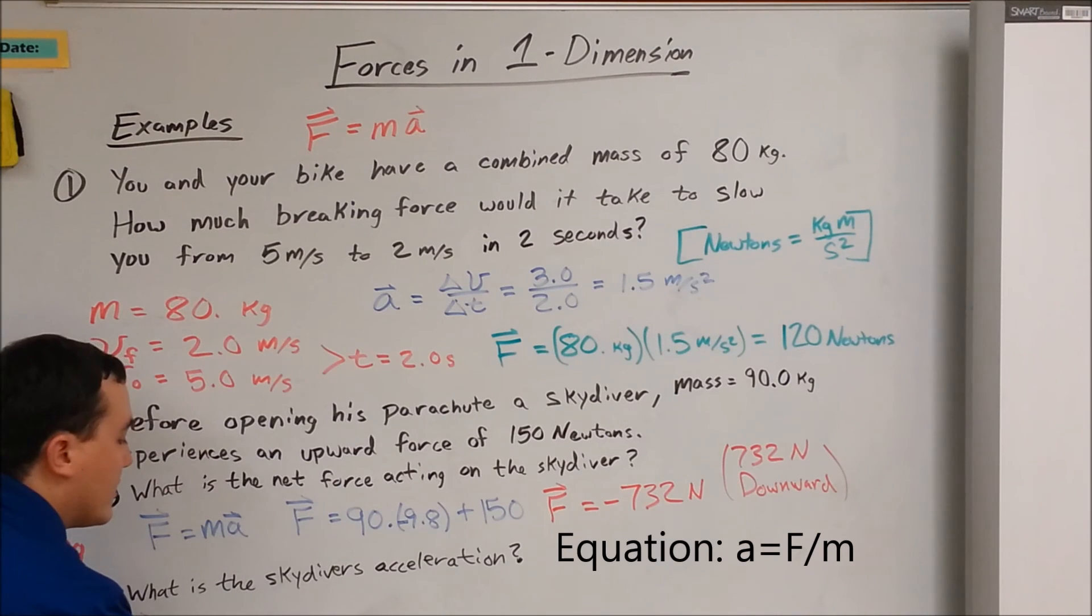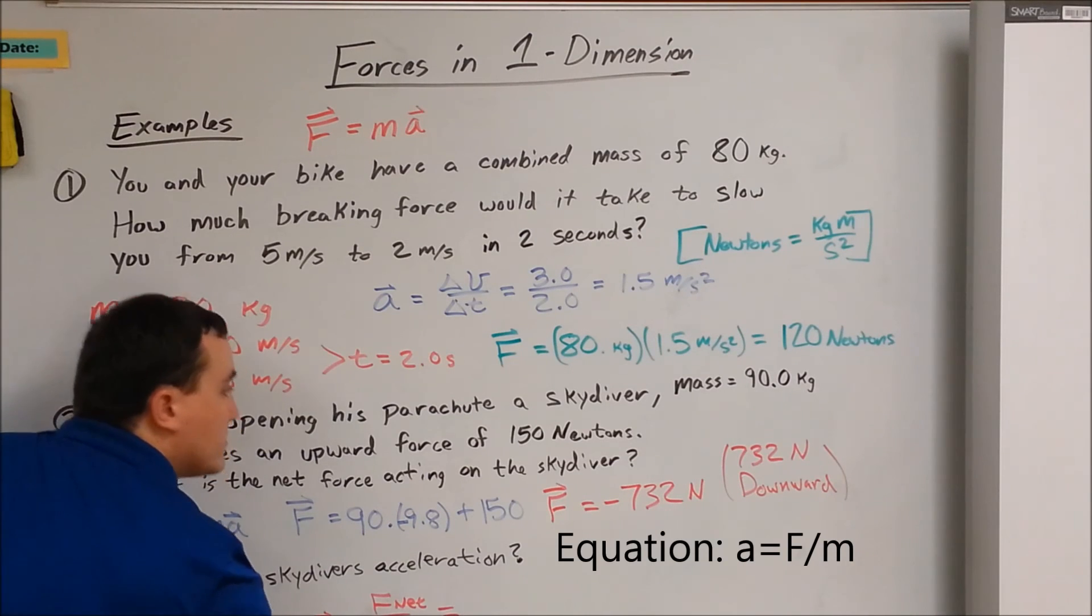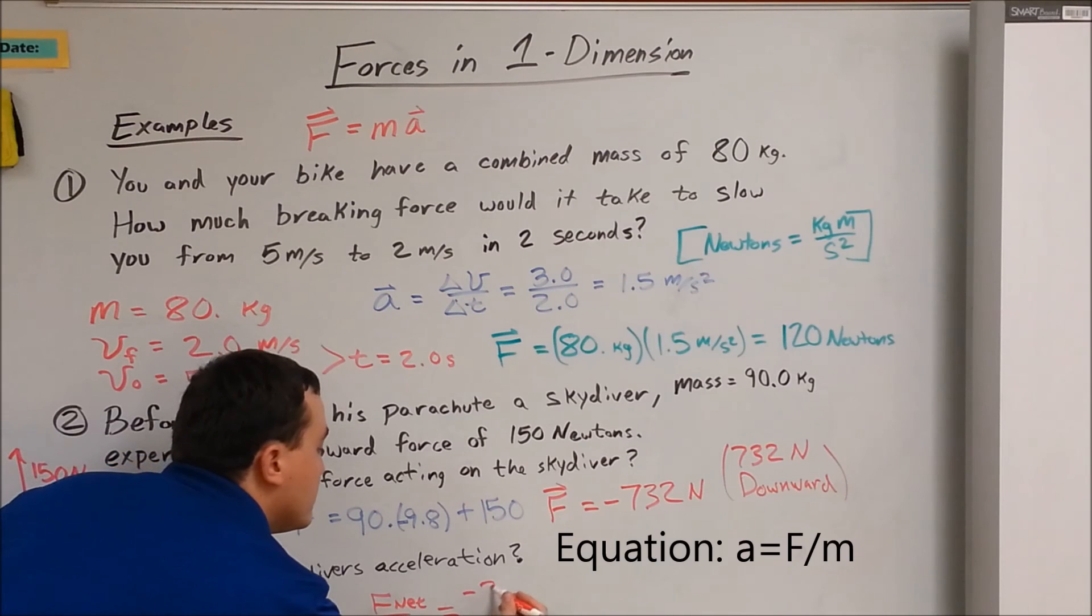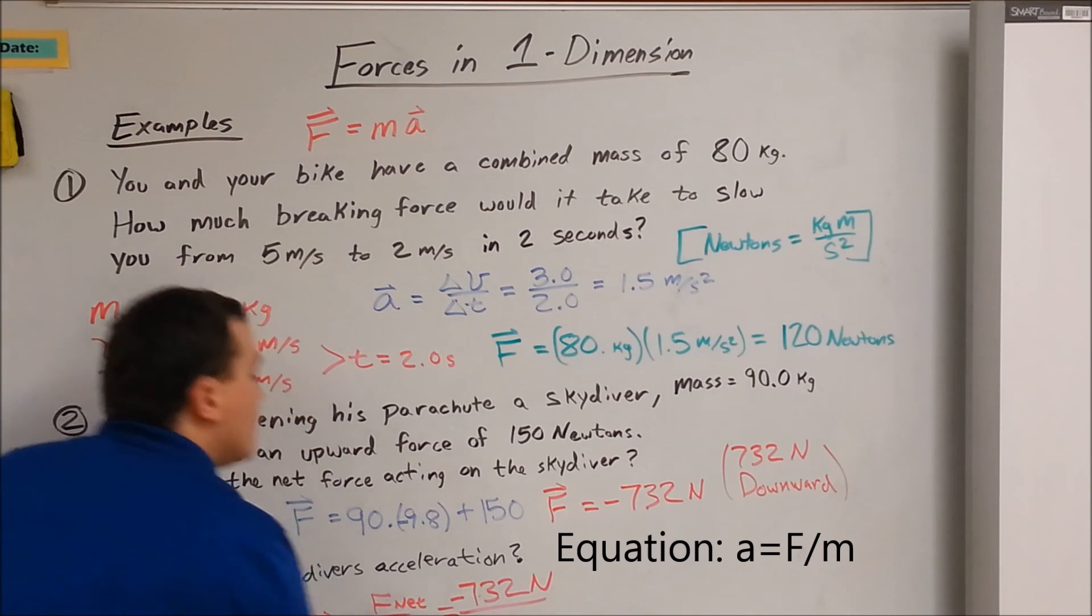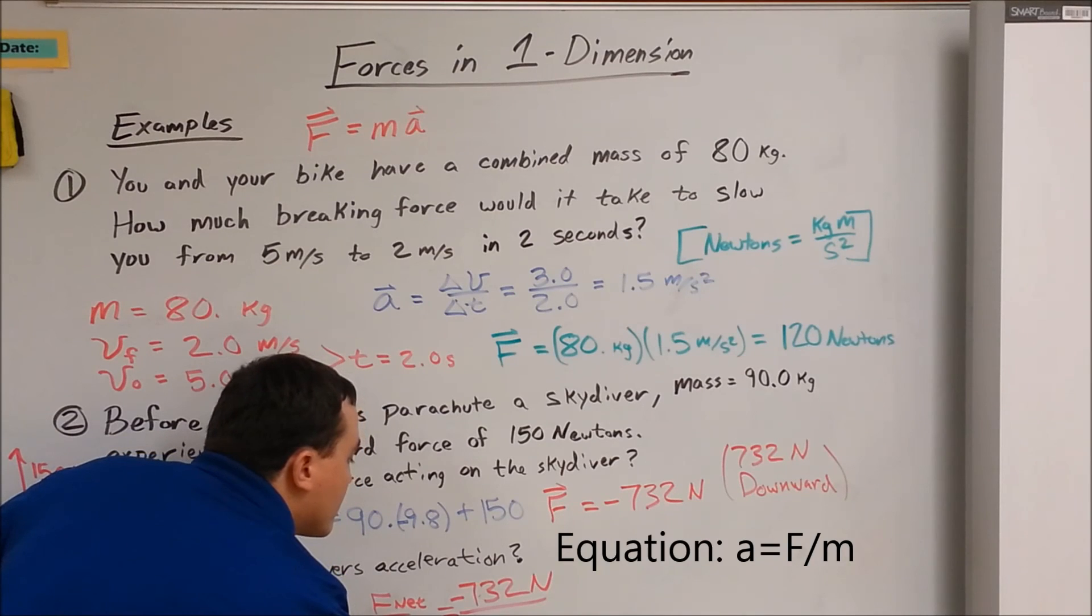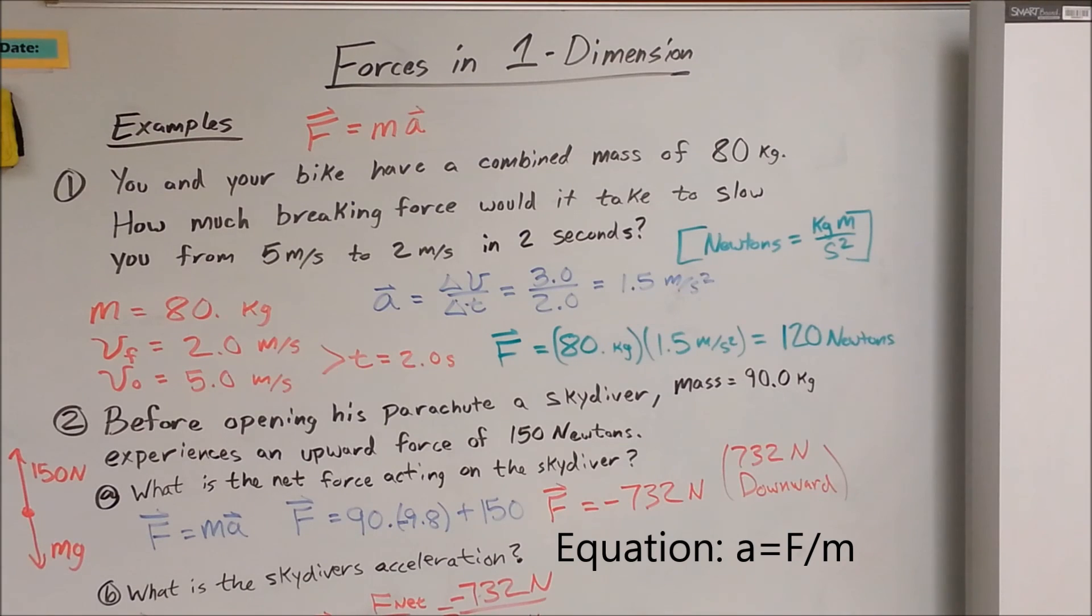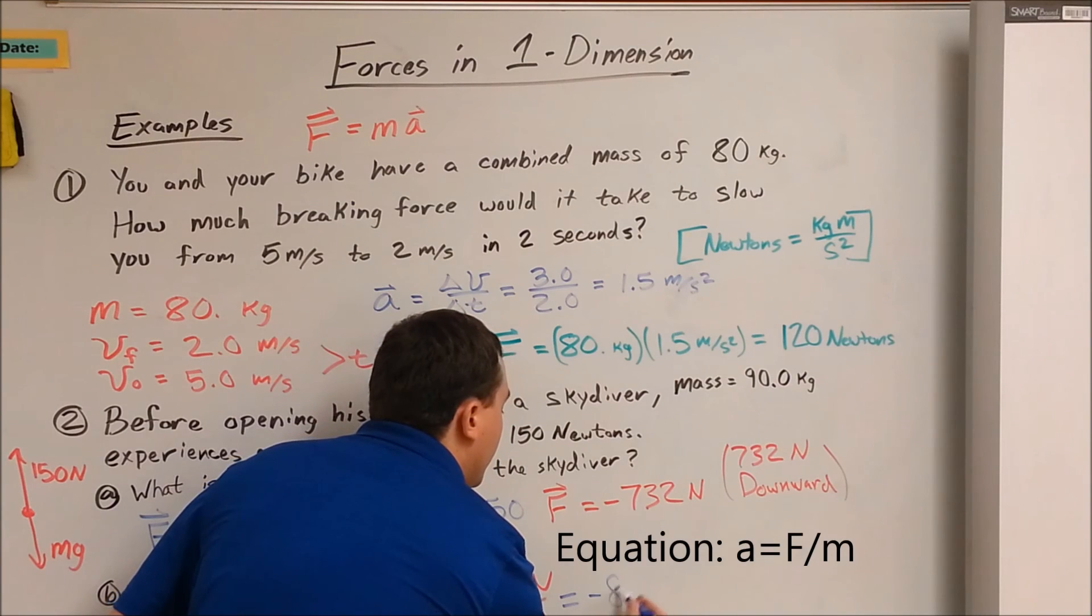So acceleration equals force, net force, over mass. Well, we know our net force is negative 732 newtons divided by our mass, that's 90 kilograms. Our net acceleration is negative 8.1 meters per second squared.